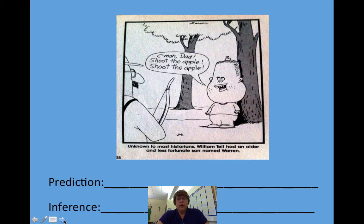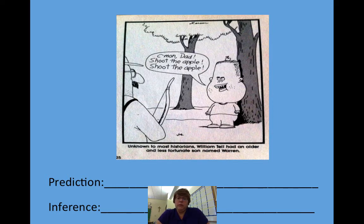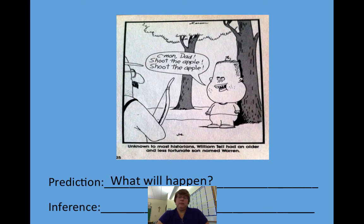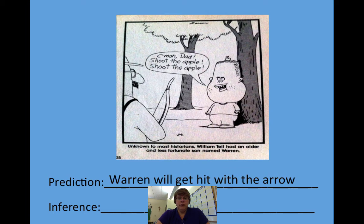First you have to observe — look at the entire cartoon and see what's happening. It says 'Come on Dad, shoot the apple, shoot the apple!' and at the bottom: 'Unknown to most historians, William Tell had an older and less fortunate son named Warren.' So my prediction, since we're trying to say that William Tell's brother is not around anymore — what's going to happen? I think Warren is going to get hit with the arrow. Poor Warren.